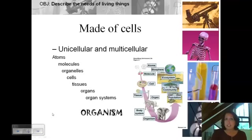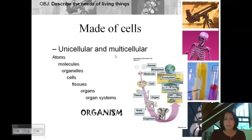The first characteristic is that they are all made of cells. All living things are made of cells. As I went through that description, some organisms are unicellular — made of just one cell — and then some are multicellular, or made of many cells.